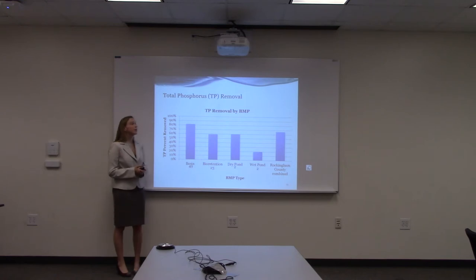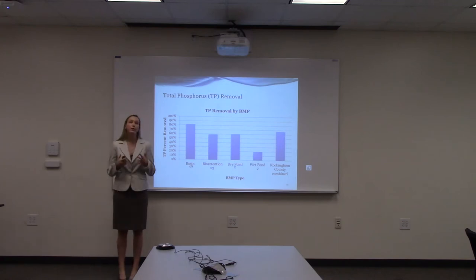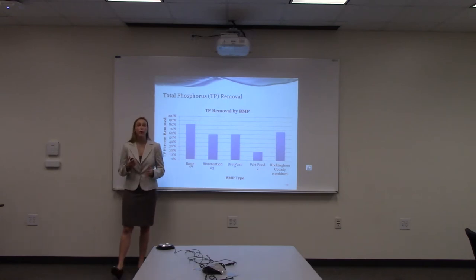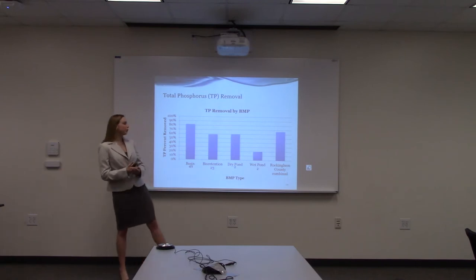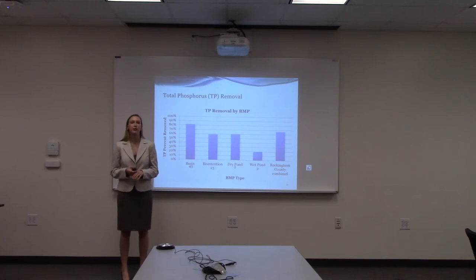The next analysis was total phosphorus. Basins are still the most effective, which is why there are 49 of them in the county — they reduce over 80% of total phosphorus flowing through. Dry ponds did a little better than expected, while wet ponds were actually the least efficient. For Rockingham County combined, facilities remove over 60% of total phosphorus flowing through the county.